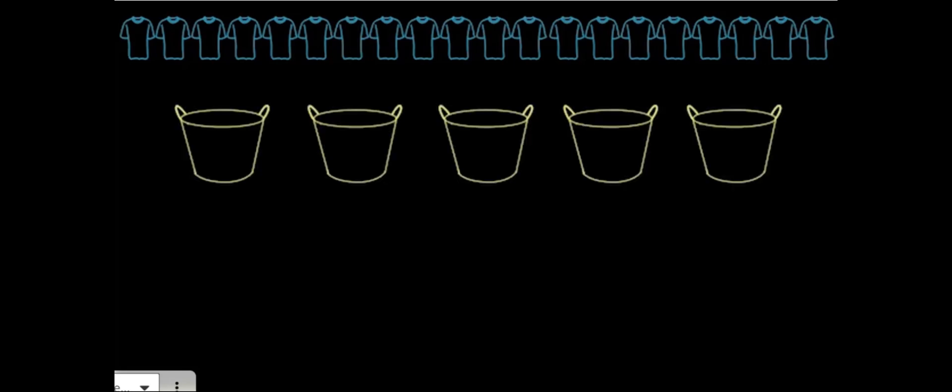In this problem, you have 20 t-shirts that need to be washed. You need to divide them equally into five laundry bins. How many go in each bin? This bar diagram shows the five bins that we are dividing into, but how many go in each?